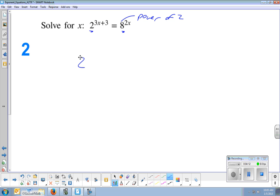And so I'm going to leave the 2 on the left, 2 to the 3x plus 3. And I'm going to change 8 to a base of 2. 8 is the same as 2 to the 3rd. Now, there was already an exponent for 8, 2x. That's still there.